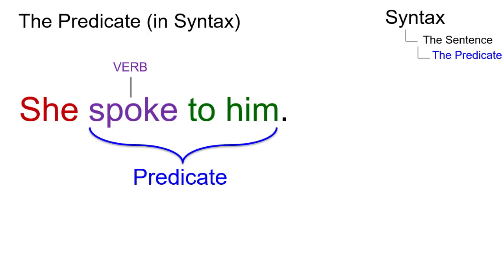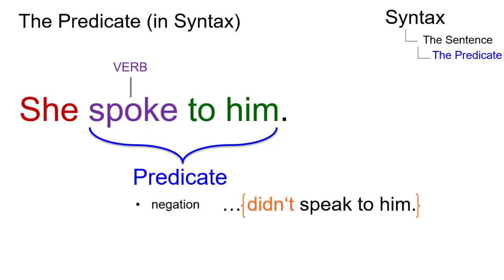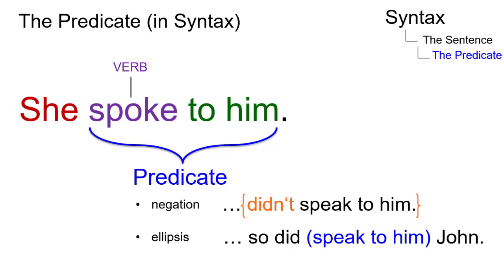Although the predicate is not a separate structural unit in English grammar, it takes some significant properties. It is the part of a clause typically affected by clause negation, or it may be omitted through ellipsis.